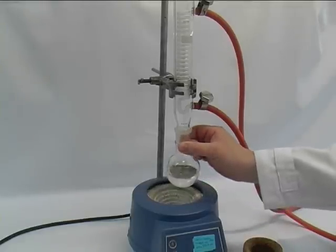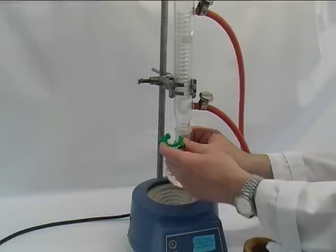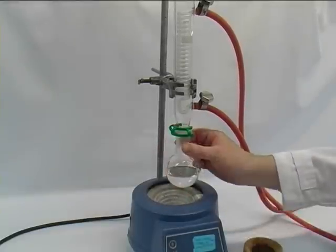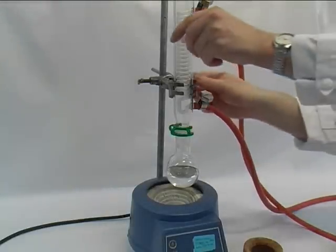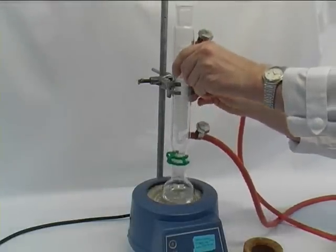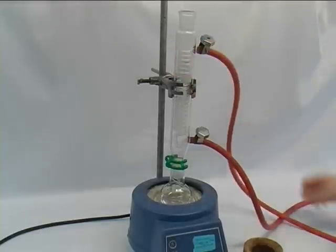Then we just clip the round bottom flask onto the reflux condenser and lower it into the heating mantle. This is very easily achieved if the whole setup is vertically aligned.